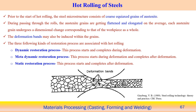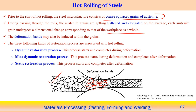When we perform hot forming operations, prior to the start of hot rolling, the steel microstructure usually consists of coarse equiaxed grains of austenite. During passing through the rolls, the austenite grains become flattened and elongated in the rolling direction. On average, each austenite grain undergoes a dimensional change corresponding to that of the workpiece as a whole. Deformation bands may also be induced within the grains during deformation of these austenitic grains.